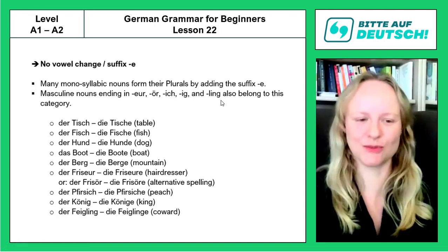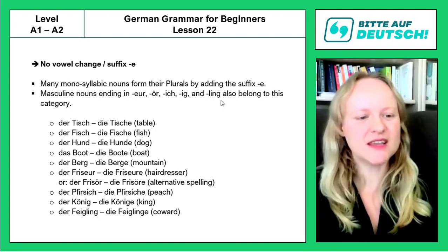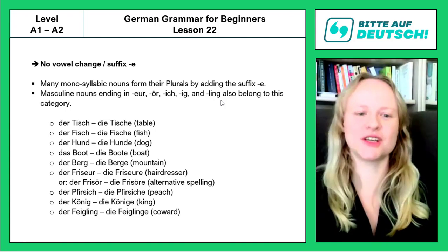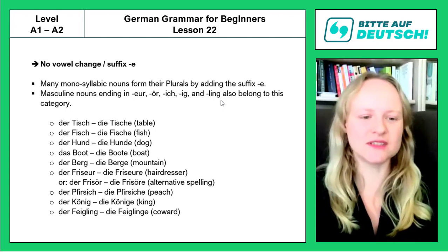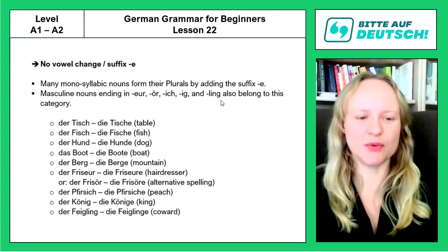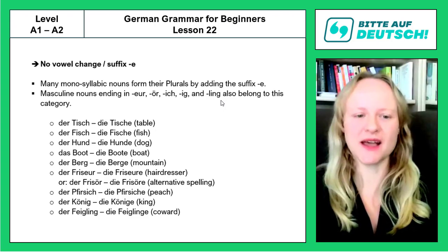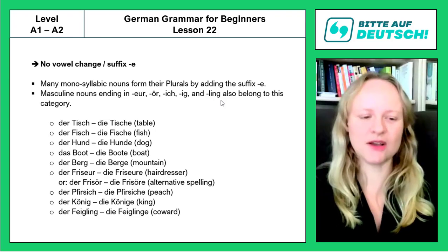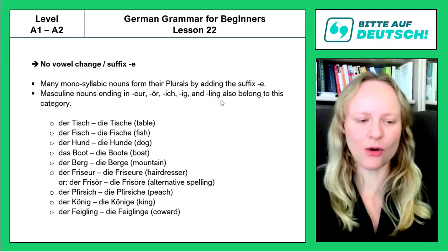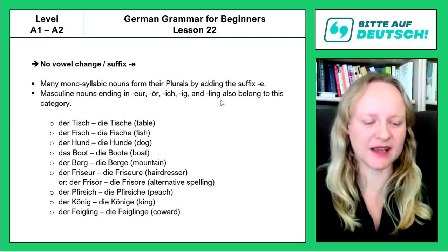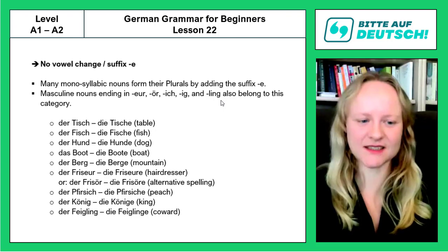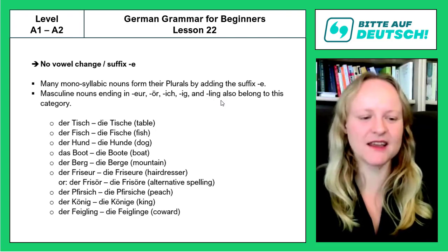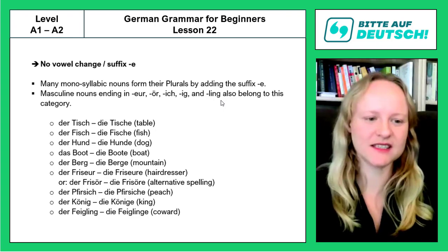Let's start reading together — please try to pronounce after me. Der Tisch, die Tische. Der Fisch, die Fische. Der Hund, die Hunde. Das Boot, die Boote. Der Berg, die Berge. Der Friseur, die Friseure — or with the alternative spelling Friseur with O-umlaut, but same meaning. Der Pfirsich, die Pfirsiche. Der König, die Könige. And der Feigling, die Feiglinge.